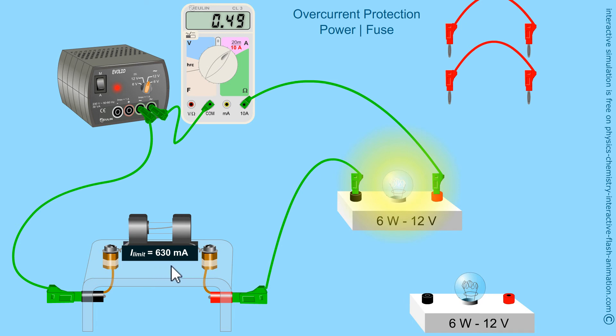This fuse indicates 630 milliamp limit. Beyond this current, the fuse blows. It destroys itself so that the circuit is saved. In this case, all is well.